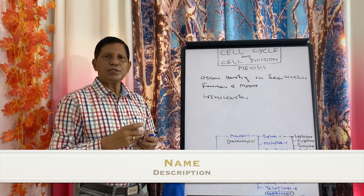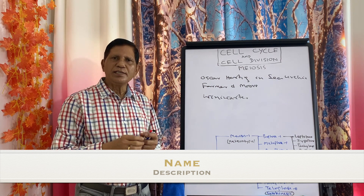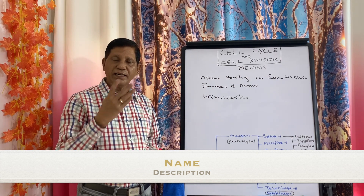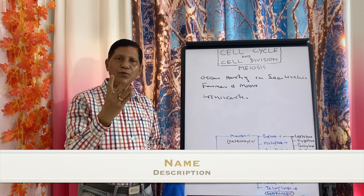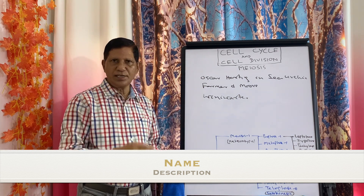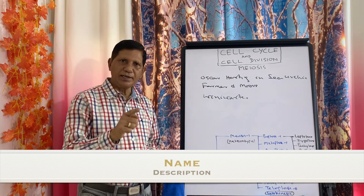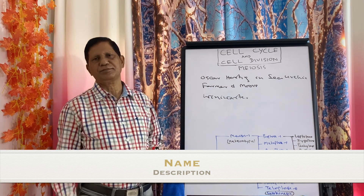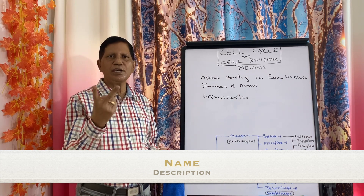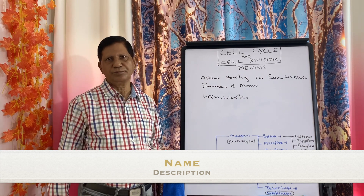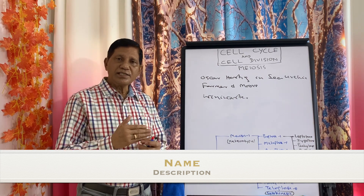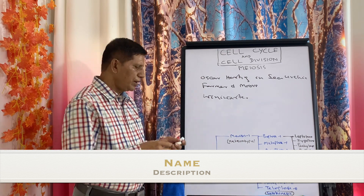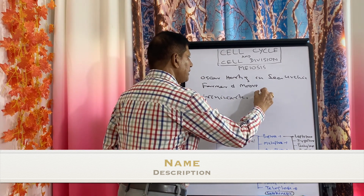So what is meiosis? Meiosis is a reduction division in which at the end of division there will be four daughter cells which are qualitatively and quantitatively different from the parent cell. Whereas in mitosis two cells were produced and both are identical. In meiosis there is reduction in chromosome number, so meiosis is also known as reduction division.